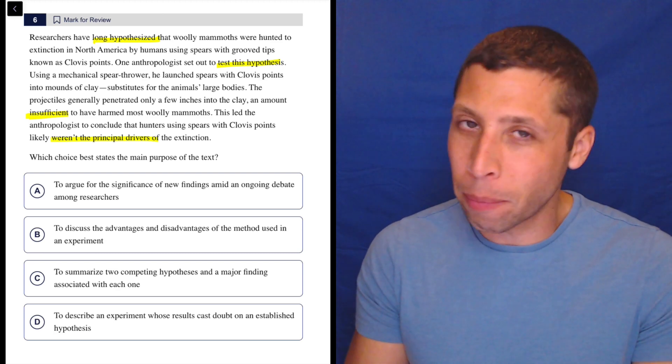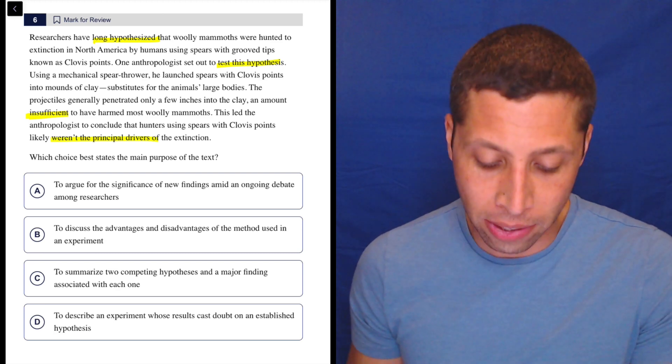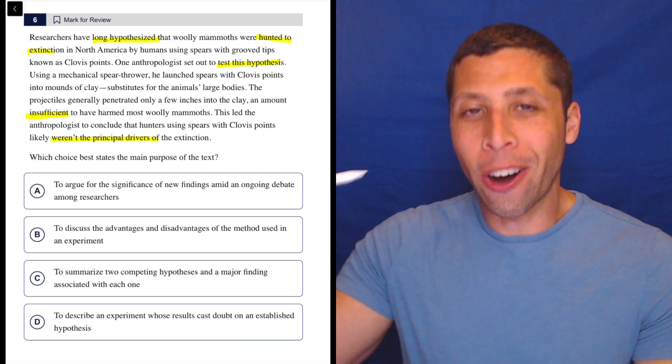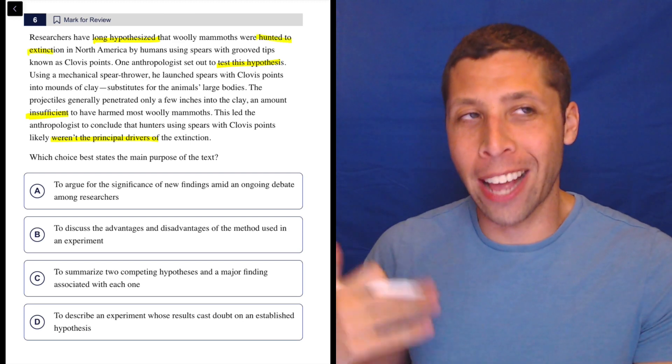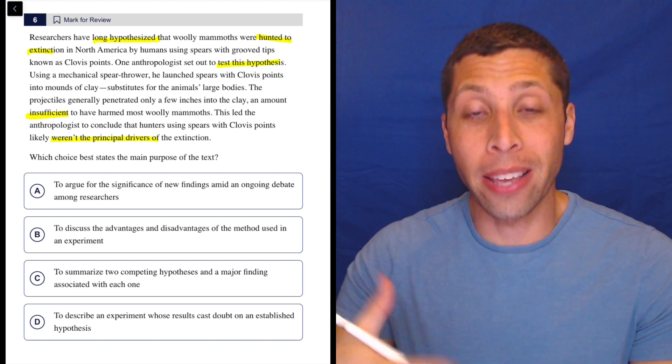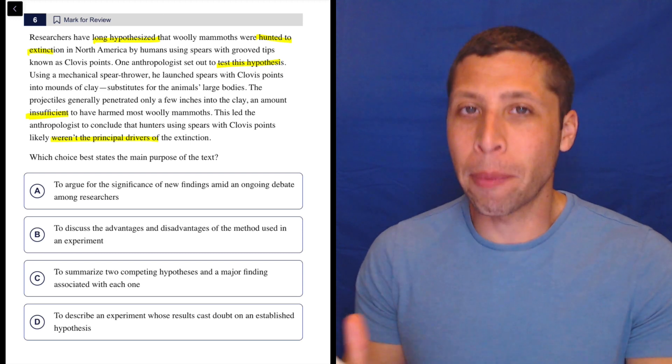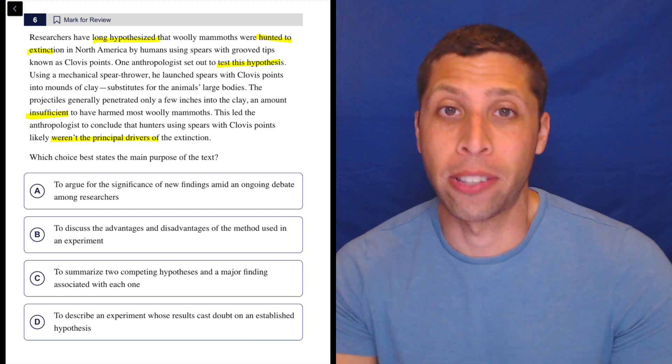I mean, now we can go back and be like, wait a minute, what did they say at the beginning? What was the hypothesis? Woolly mammoths were hunted to extinction, right? So because I kind of got to the conclusion and see what they want me to care about, that there's something that we are maybe disproving in this experiment, we can go back and be like, okay, but was that the main hypothesis from the start?